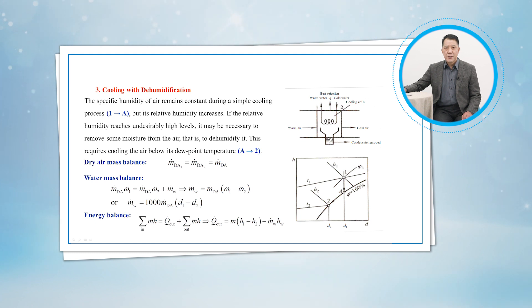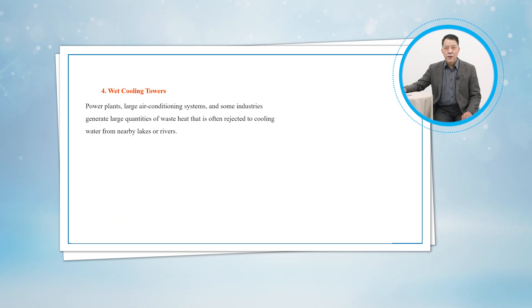The cool, saturated air at state 2 is usually routed directly to the room, where it mixes with the room air. In some cases, however, the air at state 2 may be at the right specific humidity, but at a very low temperature. In such cases, air is passed through a heating section where its temperature is raised to a more comfortable level before it is routed to the room.